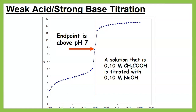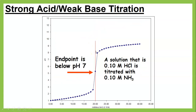With a weak acid in the beaker and a strong base added, we start at a higher pH and the equivalence point ends up above 7 — the exact value depends on the acid. With a strong acid and a weak base, we start at a low pH, end higher but not as high, and the equivalence point is below 7.